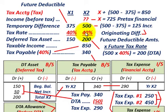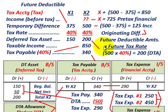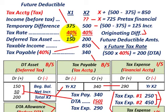For our deferred tax asset in year X1: $375,000 times the tax rate of 40% gives us the deferred tax asset of $150,000.